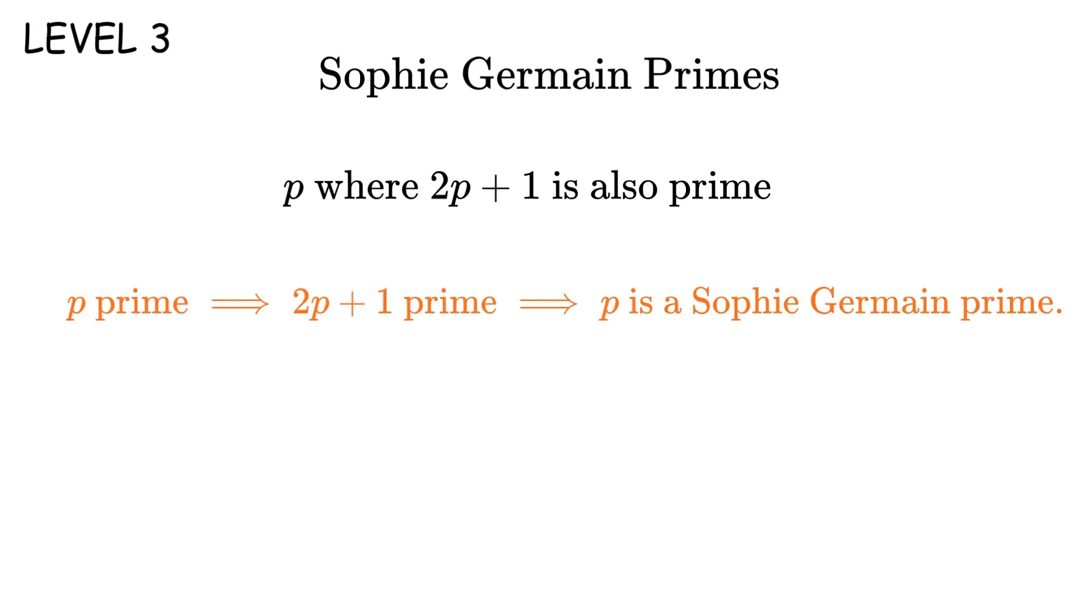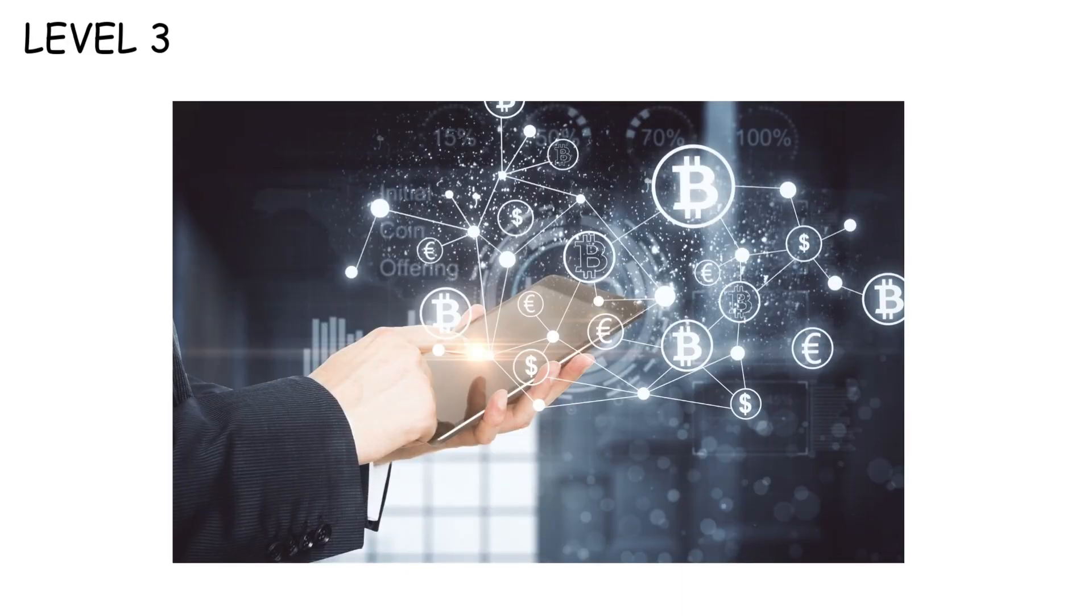Level 3, Sophie Germain primes. These are primes p, where 2 times p plus 1 is also prime. So you've got a prime. You double it. Add 1, and if that's also prime, boom. You've got a Sophie Germain prime. The number 2 times p plus 1 is called a safe prime. These primes are massively important in cryptography because they create groups that are hard to crack. Named after the French mathematician Sophie Germain, who studied them in the early 1800s.